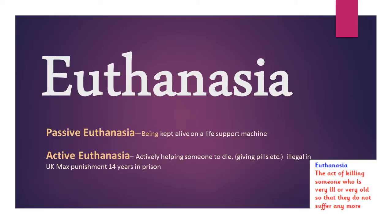There are two different types of euthanasia to look at. There is passive euthanasia, which is not illegal, and it is where someone is kept alive on a life support machine. If they are being kept alive on a life support machine, it means that they cannot actually live themselves — it is the machine keeping them alive.